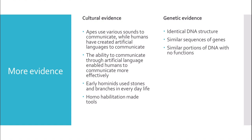For more evidence of evolution — cultural evidence: apes use various sounds to communicate, while humans have created artificial languages enabling more effective communication. Early hominids used stones and branches in everyday life, and Homo habilis made the first proper tools — that species is also known as the handyman. So under cultural evidence we have tools and language. For genetic evidence: there is identical DNA structure, similar sequences of genes, and similar portions of non-functional DNA.